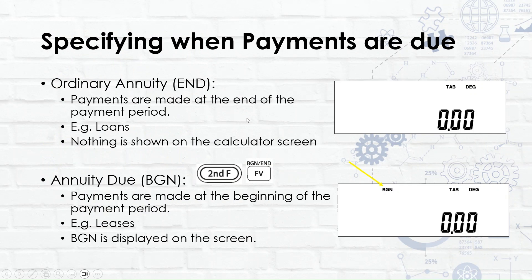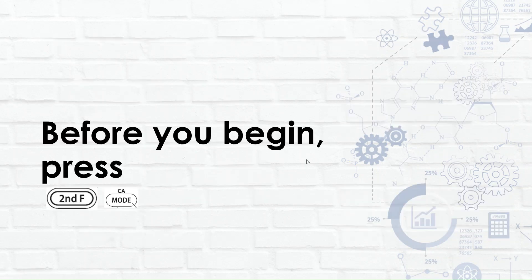The difference is simply when the payment is made. An ordinary annuity has payments made at the end of a period, like a loan — nothing special is shown on screen. An annuity due shows 'BGN' on screen for 'beginning,' and that's when payments are made at the beginning of the month, like a lease.